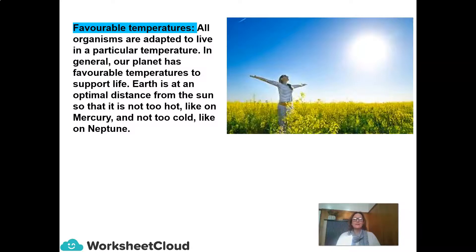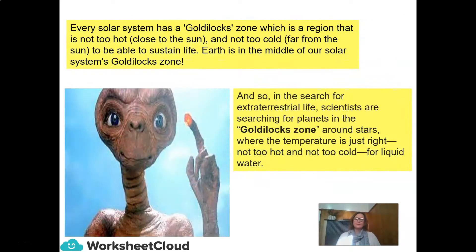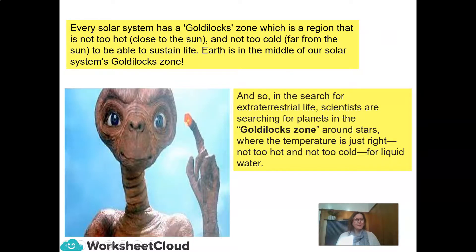In general, our planet has favorable temperatures to support life. Earth is at an optimal distance from the sun, so that it is not too hot like on Mercury, and not too cold like on Neptune. In Natural Sciences, when we use the word favorable, we mean something that is advantageous, helpful, or optimal. Every solar system has a Goldilocks zone, which is a region that is not too hot close to the sun, and not too cold far from the sun, to be able to sustain life. Earth is in the middle of our solar system's Goldilocks zone. In the search for extraterrestrial life, scientists are searching for planets in the Goldilocks zone around stars where the temperature is just right — not too hot and not too cold — for liquid water.